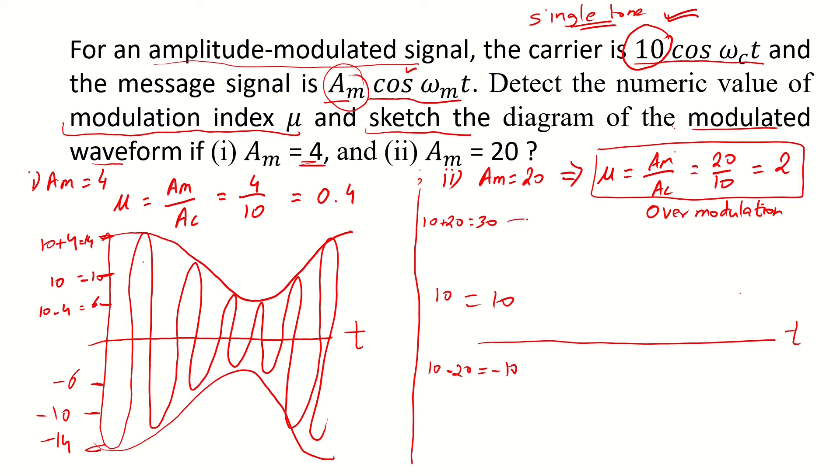So the upper envelope is something like this and similarly the lower envelope is something like that. This range would be minus 30.